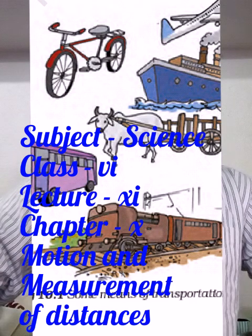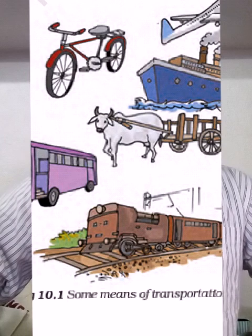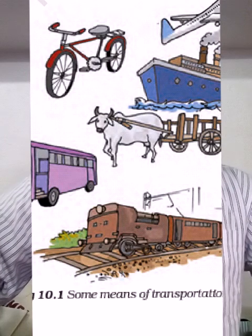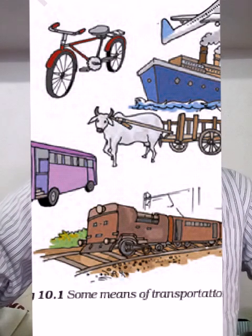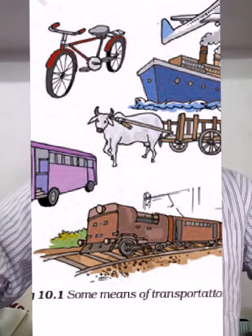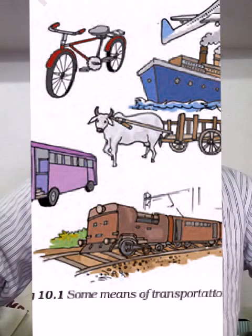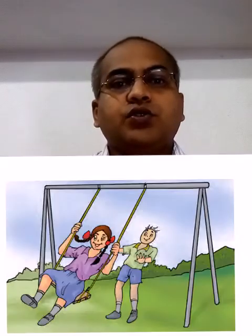Yesterday we had discussed about types of motion: rectilinear motion — motion in a straight line; curvilinear motion — motion on a curved path. Both are known as linear motion. Then comes circular motion — motion in a circular path — under which we discussed rotation and revolution, taking the example of the motion of Earth and Sun.